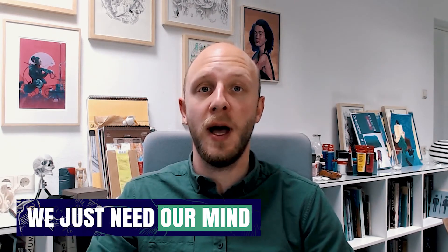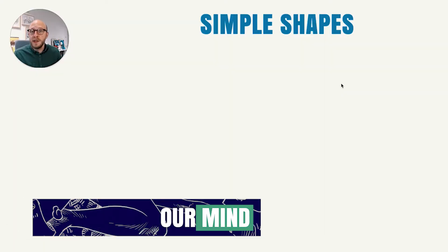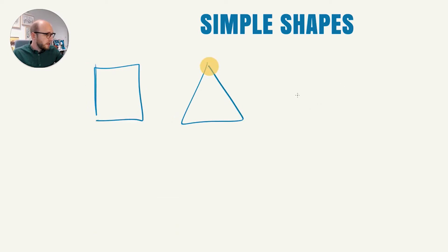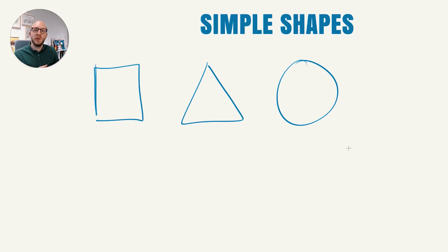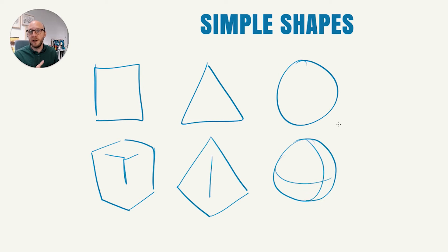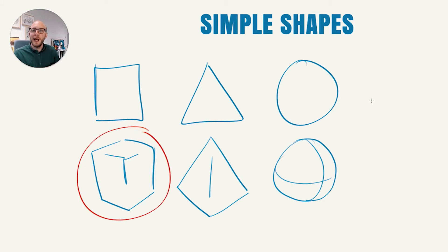Visualization is a bit different from drawing — for drawing we actually need a pencil, but for visualization we just need our mind. To visualize, we need a couple of shapes: a rectangle, a triangle, and a sphere. These shapes can be used to draw nearly anything, especially when you visualize them as three-dimensional forms — turning the rectangle into a box, the triangle into a pyramid, and the sphere into an orb. Of these three forms, the box is the most important one.